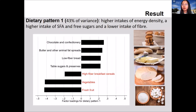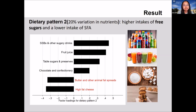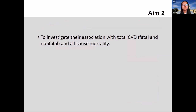Here we list only the food groups which contributed to the dietary patterns the most. Dietary pattern one was characterized by high intakes of chocolate and confectionery, butter, low-fiber bread, and table sugars, and low intakes of fresh fruits, vegetables, and high-fiber breakfast cereals. Dietary pattern two is more unusual; this pattern was characterized by high intake of sugar-sweetened beverages, fruit juice, table sugars and preserves, chocolate, and low intakes of high-fat cheese and butter.